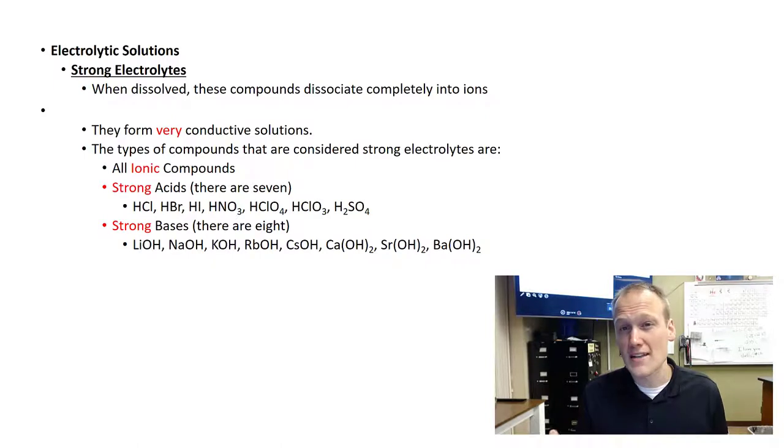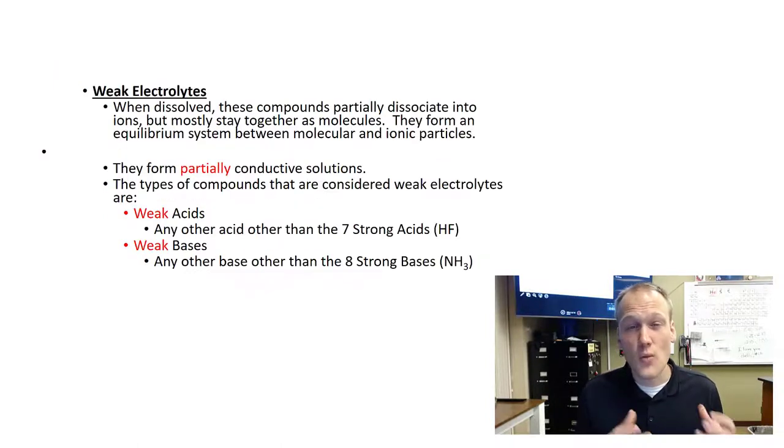We'll talk more about acids and bases as we move along in Unit 13. A weak electrolyte is something that when dissolved, only partially dissociates. When they're dissolved, some of them might break apart into ions, but a lot of them will stay together as molecules. Because of this, they will only form partially conductive solutions. Weak acids and weak bases partially dissociate and usually form weak electrolytes. Any acid that's not one of the seven strong acids and any base that's not one of the eight strong bases would be considered a weak acid or weak base.